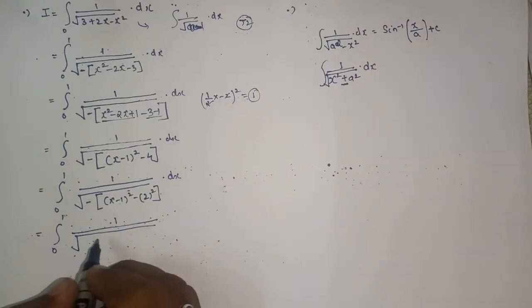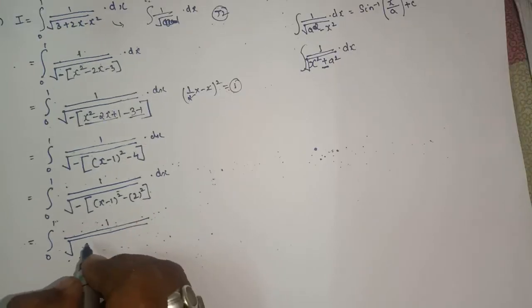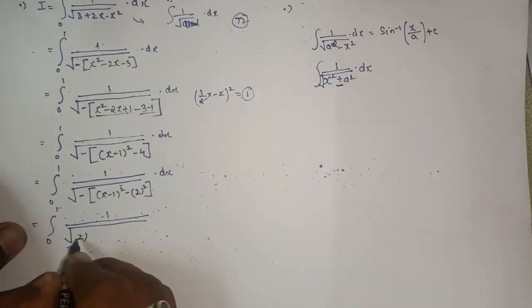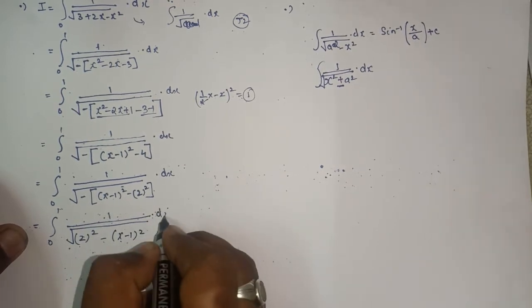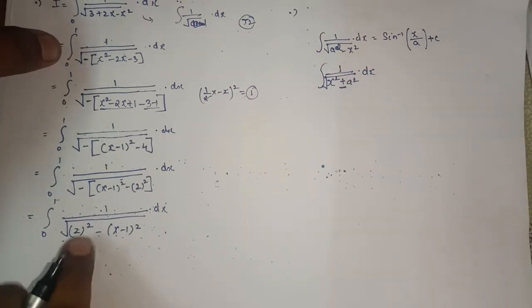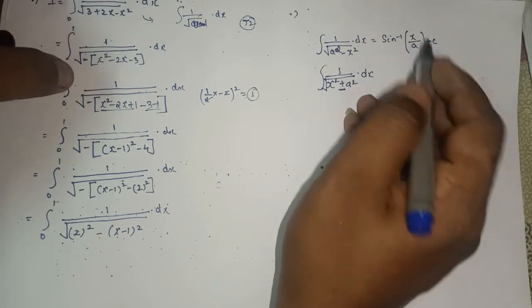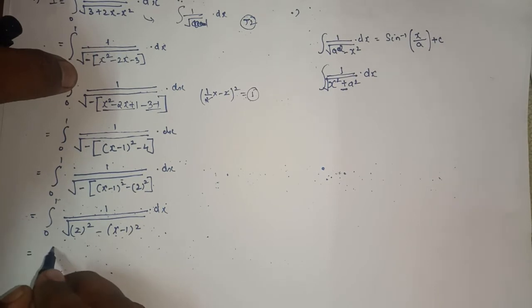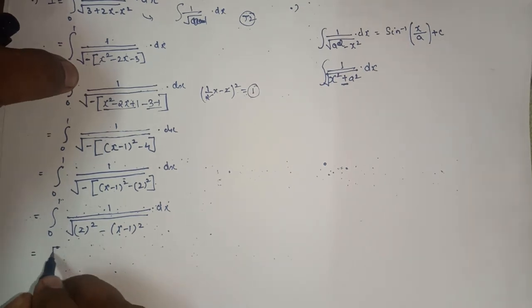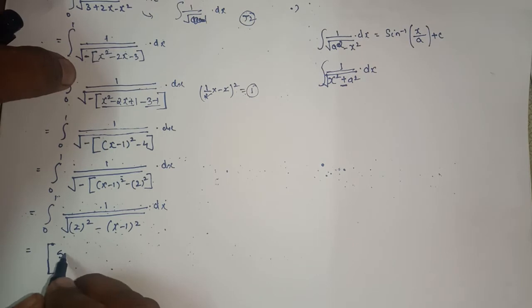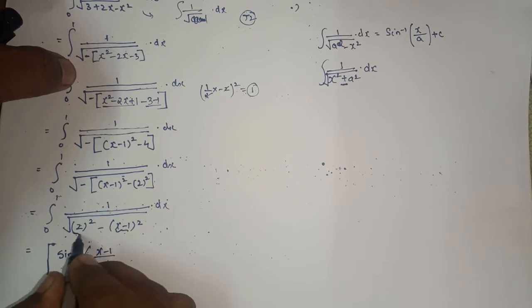Just opening the bracket with this minus, the minus-minus becomes plus, so we get 2² minus (x−1)² inside the root. Now clearly this section looks like ∫1/√(a² − x²) dx, which equals sin⁻¹(x/a) + c. So here also after integrating with respect to x, you will get sin⁻¹ of (x−1)/2, with limits from 0 to 1.